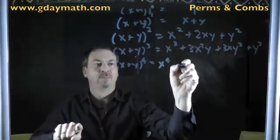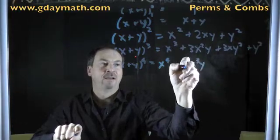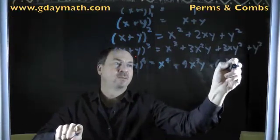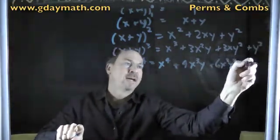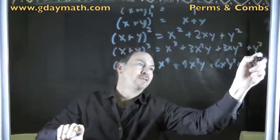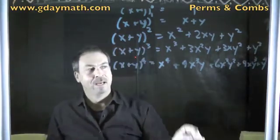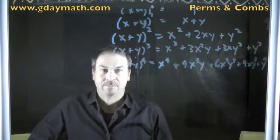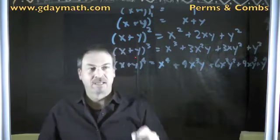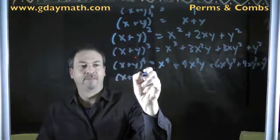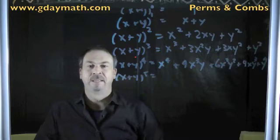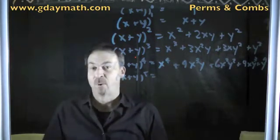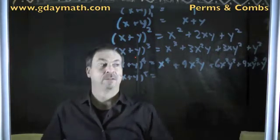So it's going to be x to the 4th, then 4 times x cubed y, then 6x squared y squared, plus 4x y cubed, plus y to the 4th. That feels like a prediction — and it is a prediction. In fact, if I kept going, x plus y to the 5th, I should see the numbers 1, 5, 10, 10, 5, 1 — the numbers on the 5th row of Pascal's Triangle, and so on.